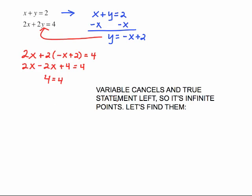So we have a variable that canceled out. We are left with a true statement because 4 does equal 4. So we know it's that infinite point situation. We need to find them. We know our points need to be in the form x comma y. We have it right there. So, we're going to write x comma negative x plus 2. So, that's our infinite points. Meaning, any point that fits this criteria will be a solution for this system.